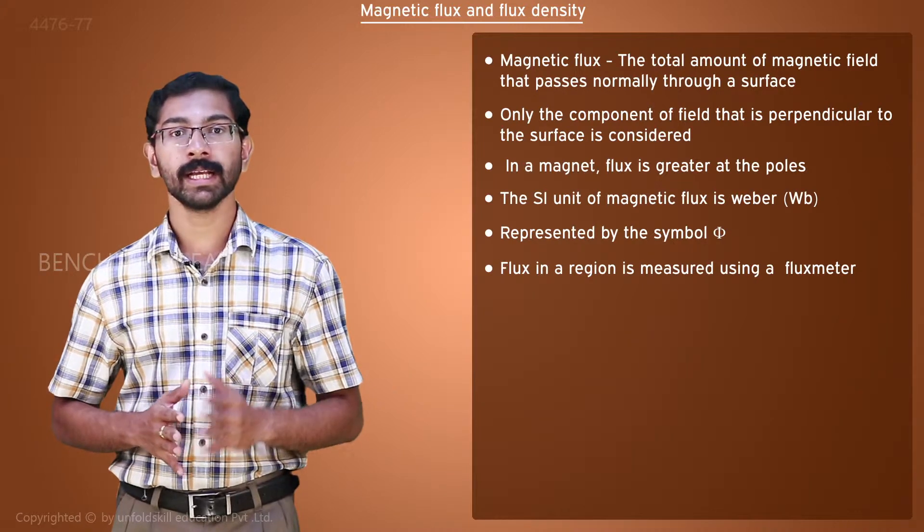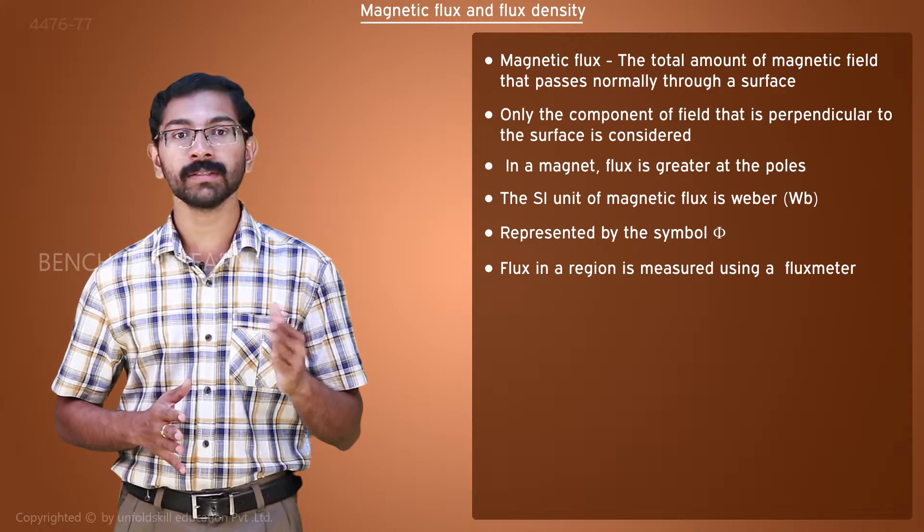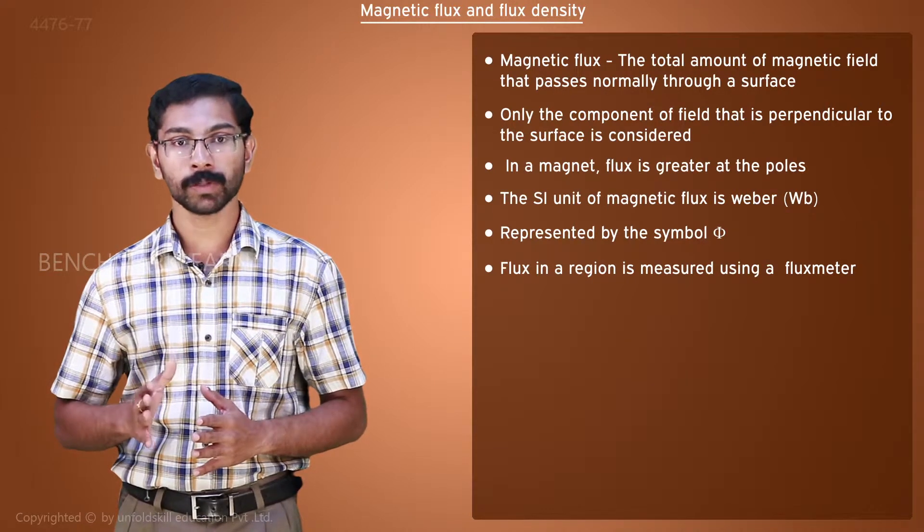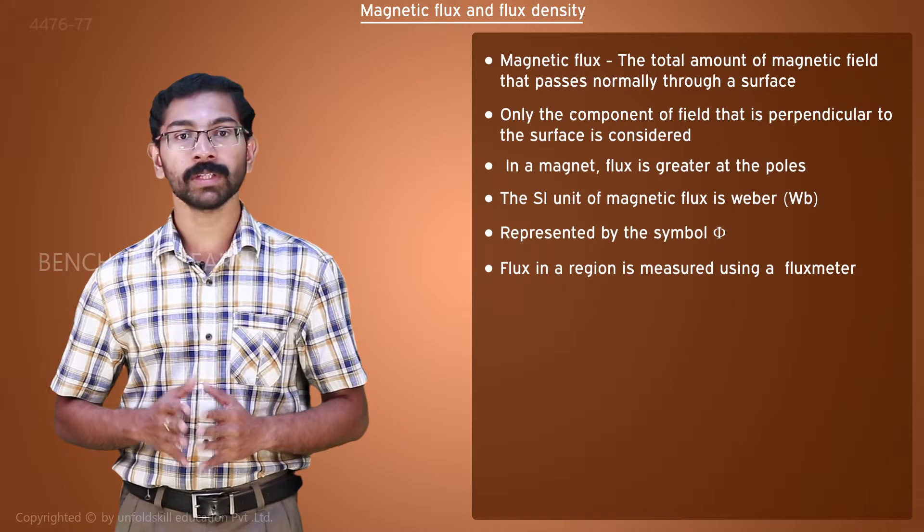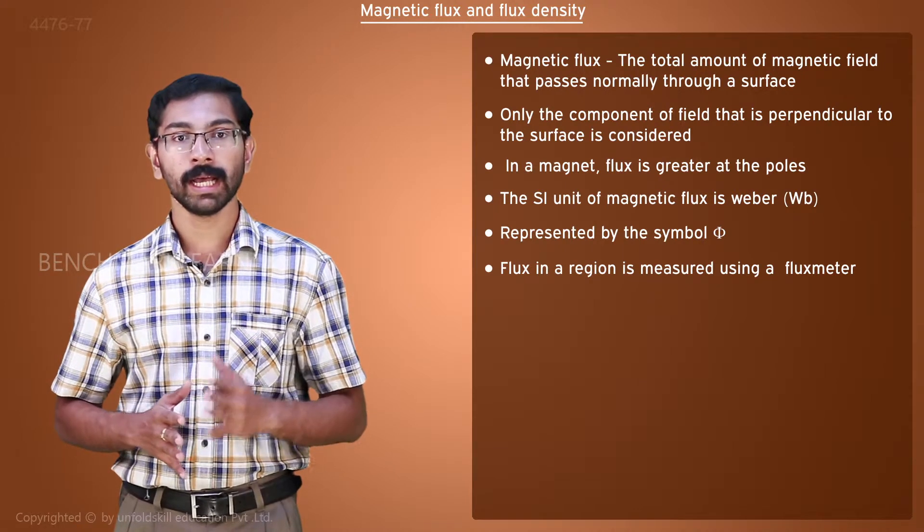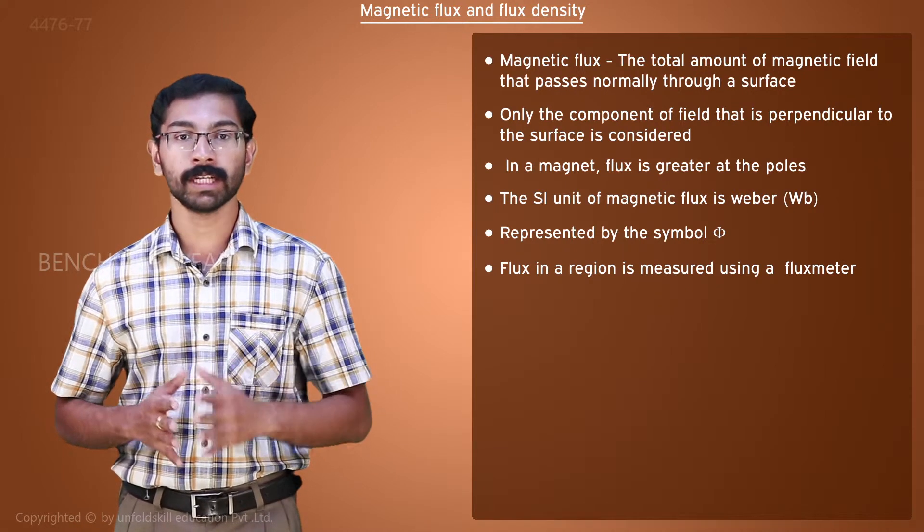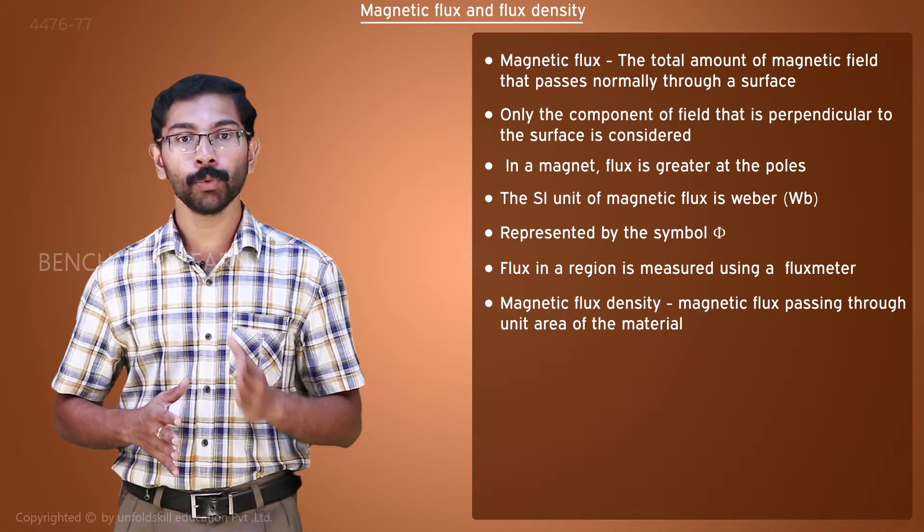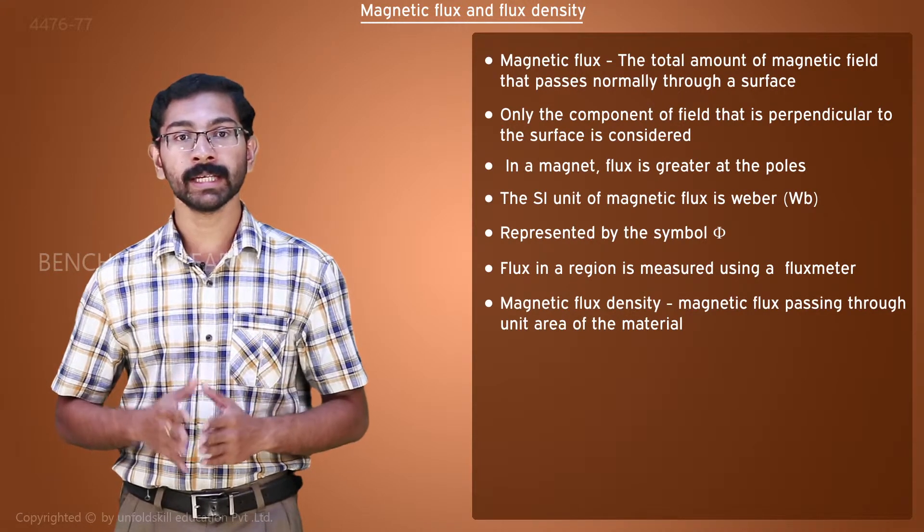In most situations we see in electrical engineering, the actual amount of flux is not easily measurable or required. Also, the flux through a material depends on the dimensions of the material like the length or cross-sectional area. But the flux passing through unit area of a material is a general term.